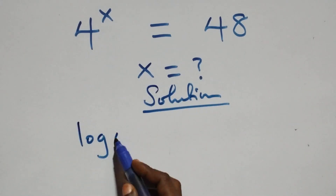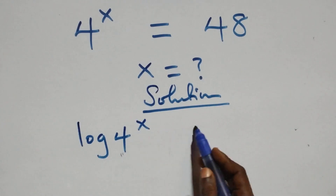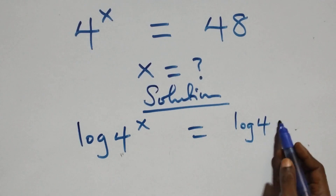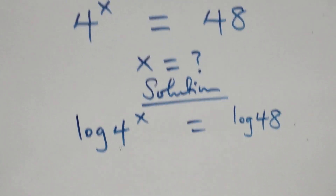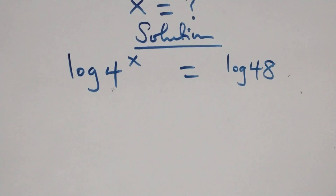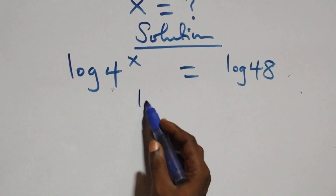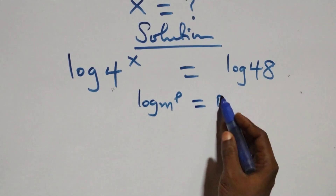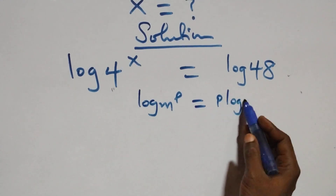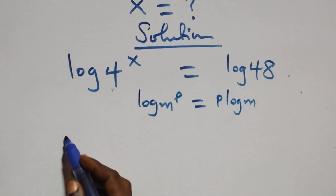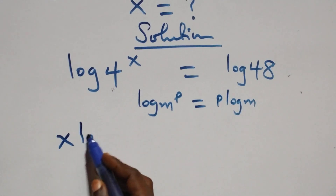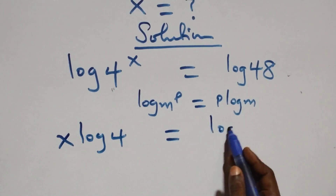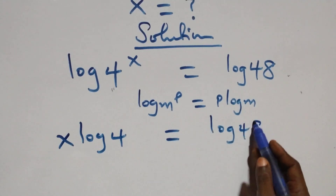We have log 4 raised to power x equals to log 48 on this side. The next step here, we apply the power law of logarithm. When we have log m raised to power p, this is the same thing as p log m. So what we have here becomes x log 4 equals to log 48 on this side.